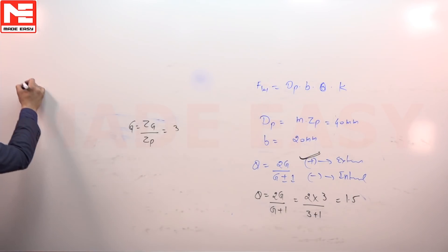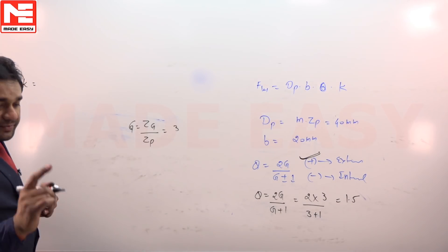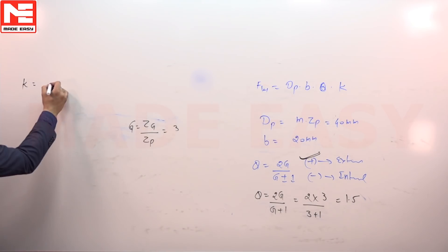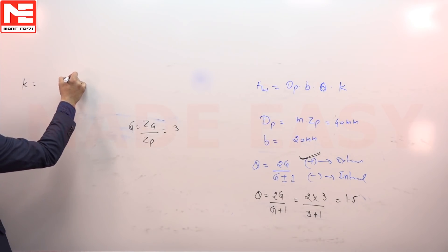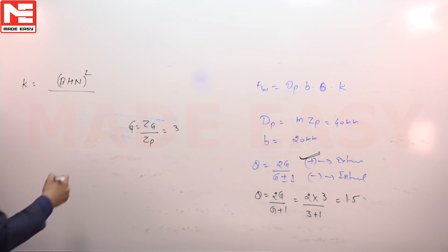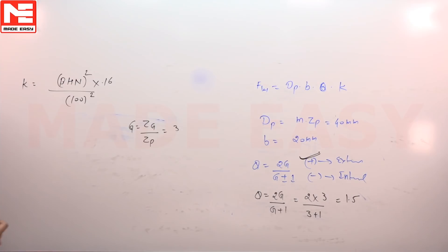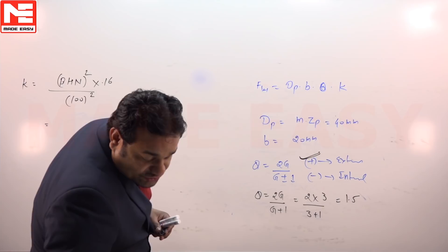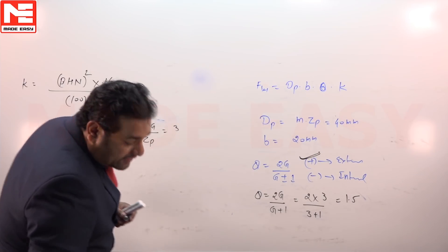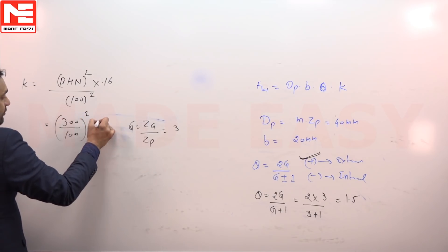There is one more factor, K, the material combination factor. There are many formulas for K, but in this case Brinell hardness number is given, so use the formula: Brinell hardness number squared divided by 100 squared times 0.16. Remember this formula.